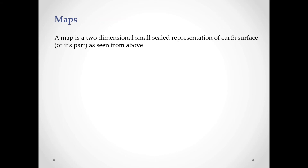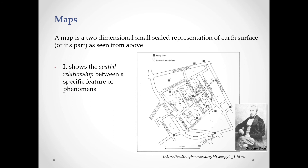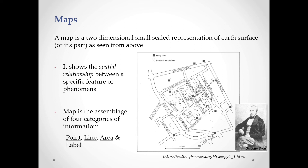A map is a two-dimensional, small-scale representation of the Earth's surface as seen from above. It shows the spatial relationship between specific features or phenomena — as demonstrated by Dr. John Snow with pump locations and cholera deaths. A map is an assembly of four categories of information: point, line, area, and level.